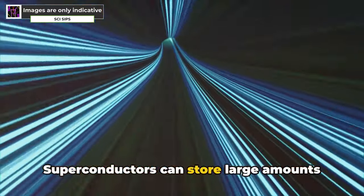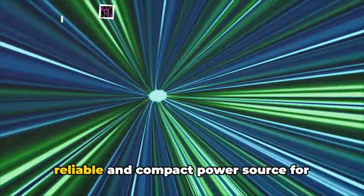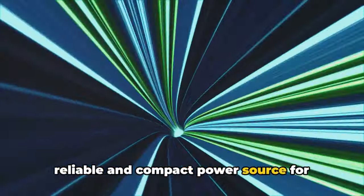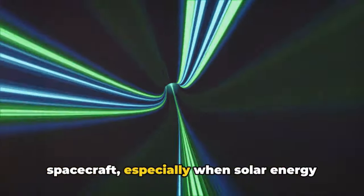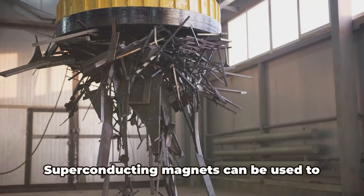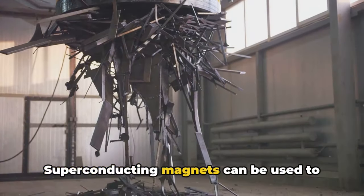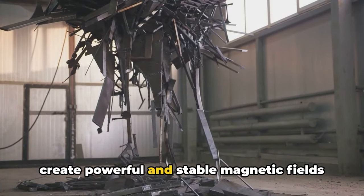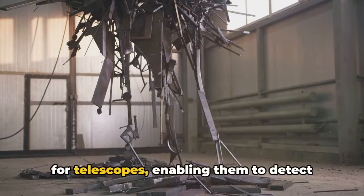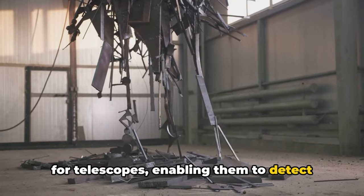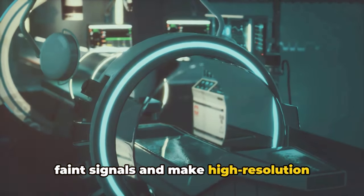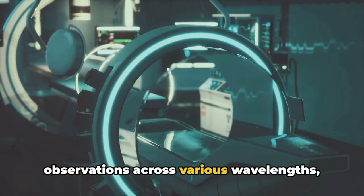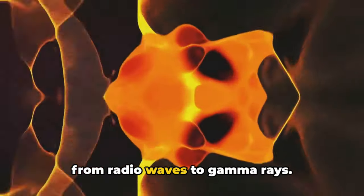Superconductors can store large amounts of energy efficiently, providing a reliable and compact power source for spacecraft, especially when solar energy is unavailable. Superconducting magnets can be used to create powerful and stable magnetic fields for telescopes, enabling them to detect faint signals and make high-resolution observations across various wavelengths, from radio waves to gamma rays.